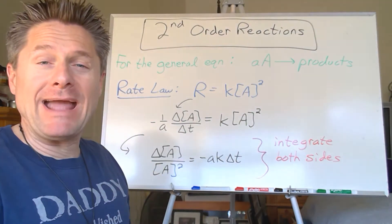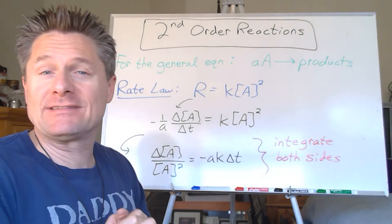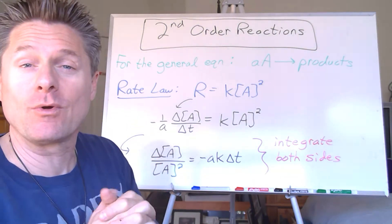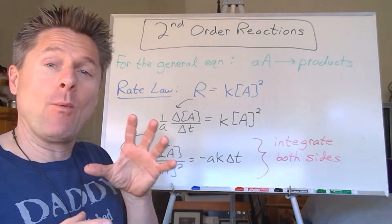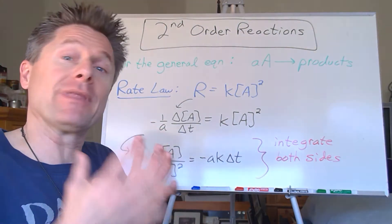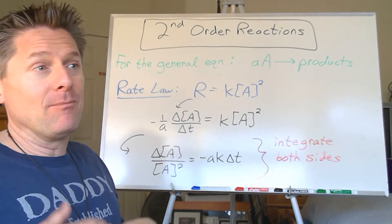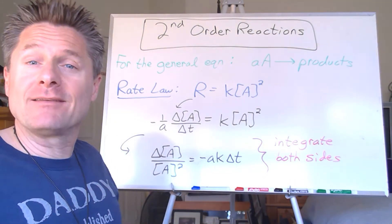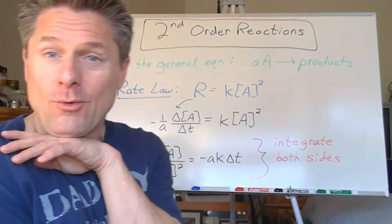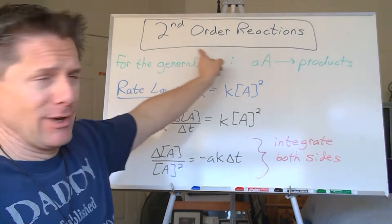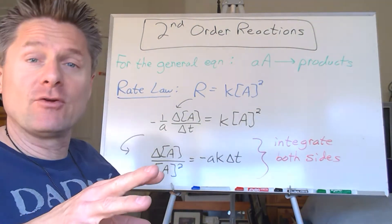Hey team, chemistry coach coming back at you for the third part of this series for zero, first, and second order reaction kinetics and deriving integrated rate laws, looking at what kind of plot we can make, what form of the concentration we have to plot versus time to get a straight line, what are the units on the rate constants, all that fun stuff. So we're going to do second order reaction kinetics today. We've done zeroth order and first order.